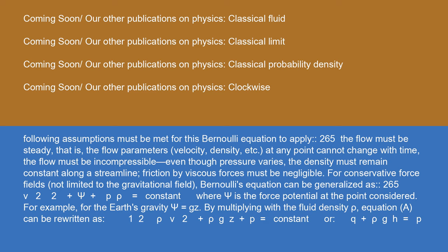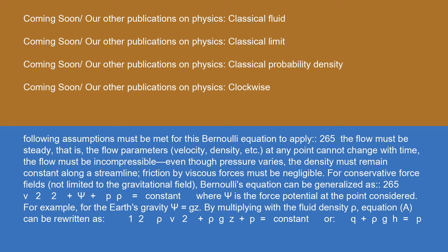For conservative force fields, not limited to the gravitational field, Bernoulli's equation can be generalized as: v²/2 + ψ + p/ρ = constant, where ψ is the force potential at the point considered. For example, for the Earth's gravity, ψ = gz. By multiplying with the fluid density ρ, the equation can be rewritten as: ½ρv² + ρgz + p = constant, or q + ρgh = p₀ + ρgz = constant, where q = ½ρv² is dynamic pressure.